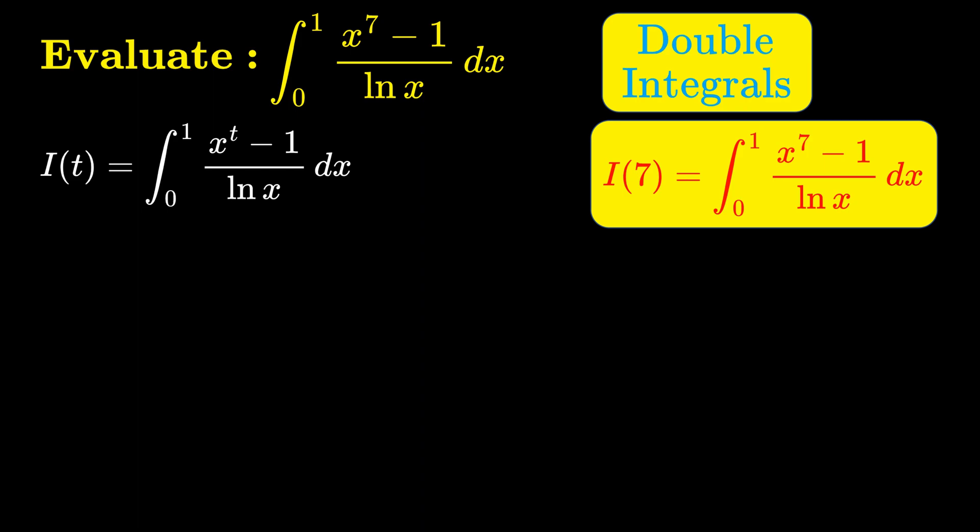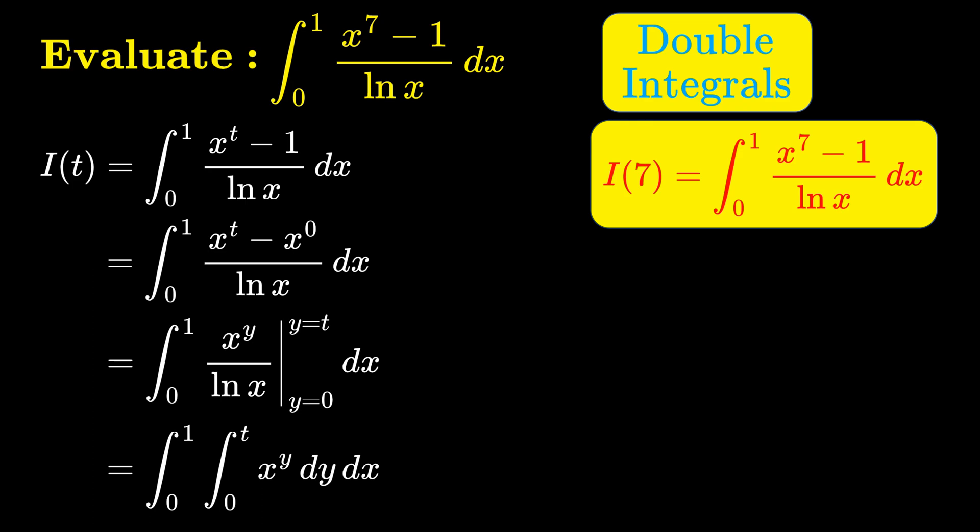Now we are going to rewrite the integral into a double integral. To do this, we first note that we can write x power t minus 1 as x power t minus x power 0. We can then view this as a function of y, that is x power y over natural log of x, evaluated at t and 0. So that now, this is actually the antiderivative of x power y with respect to y from 0 to t.